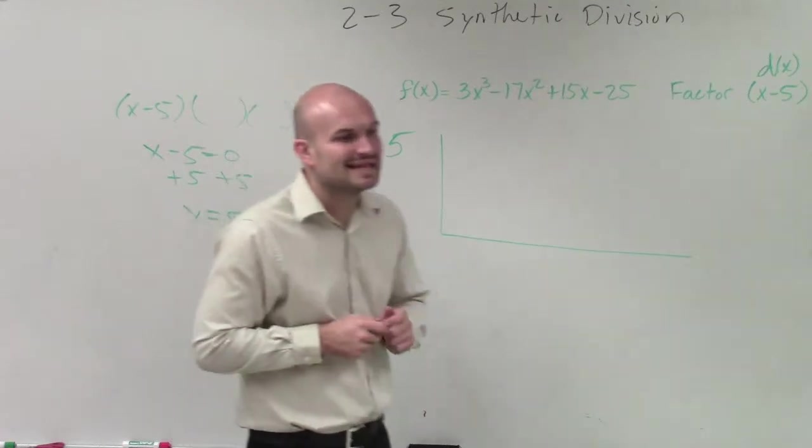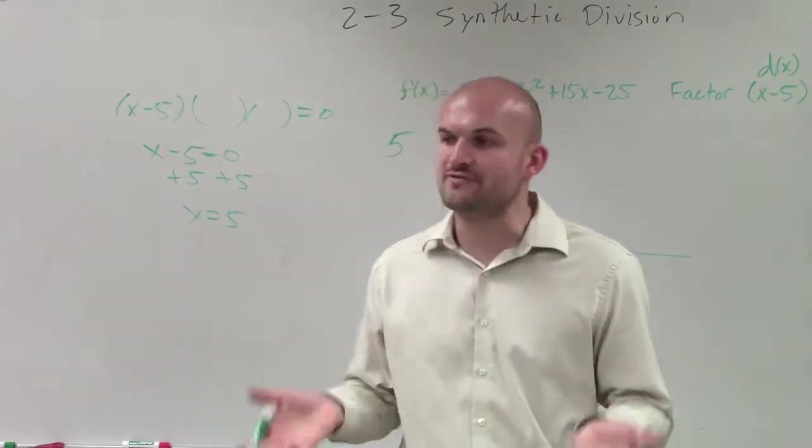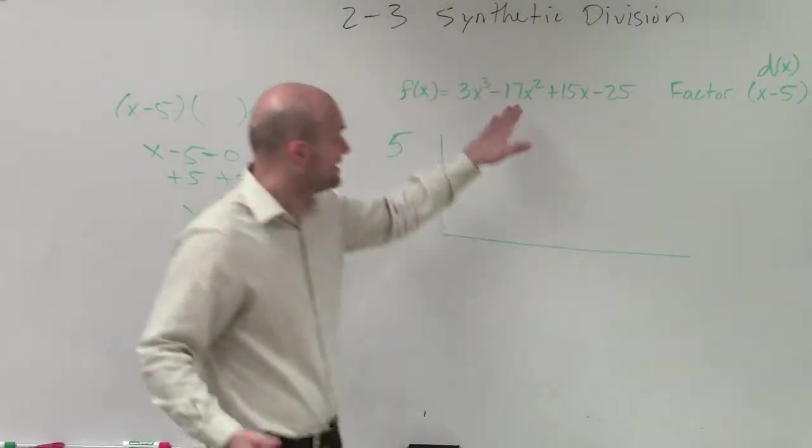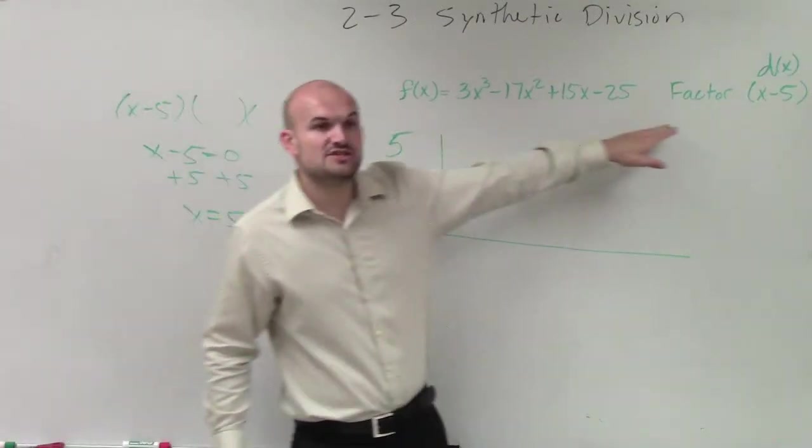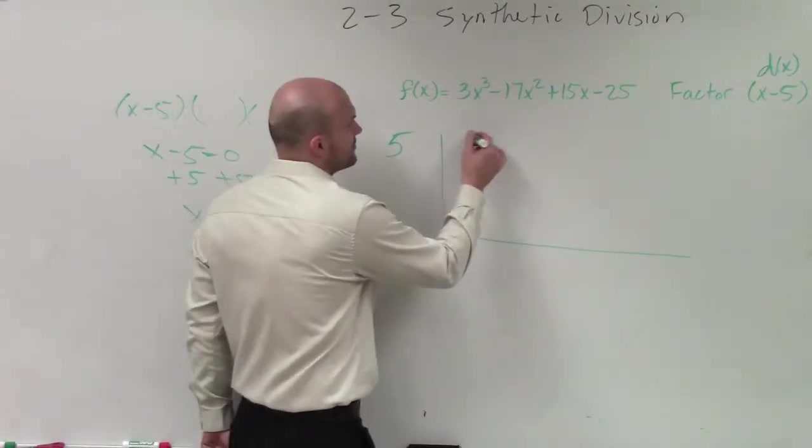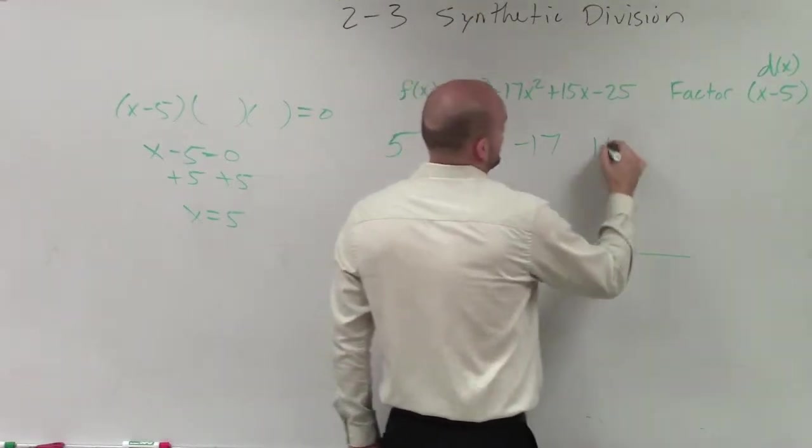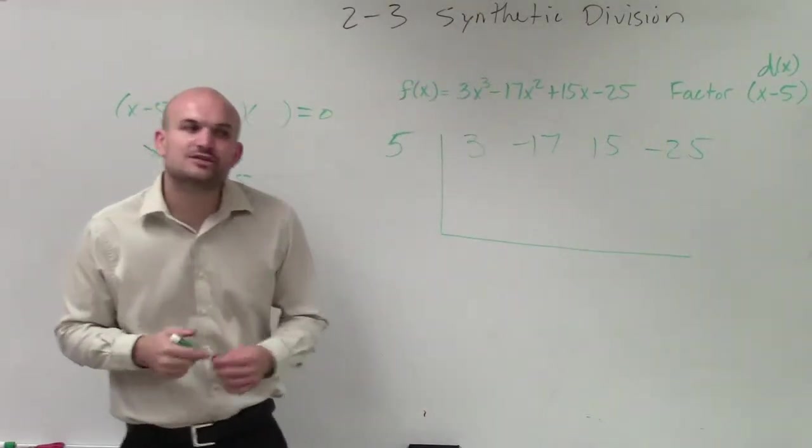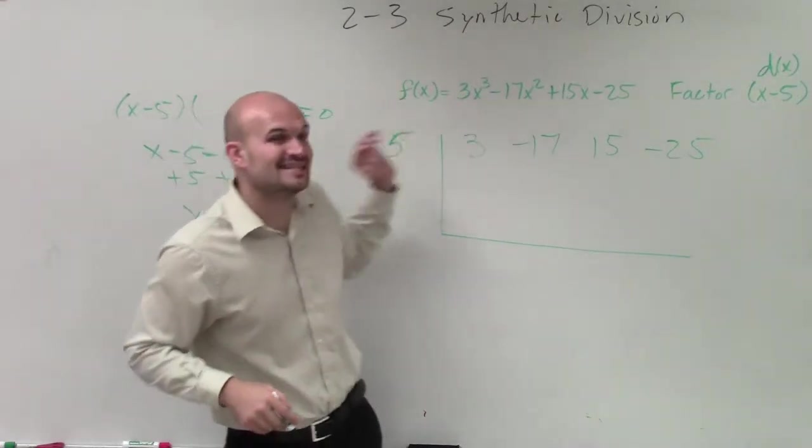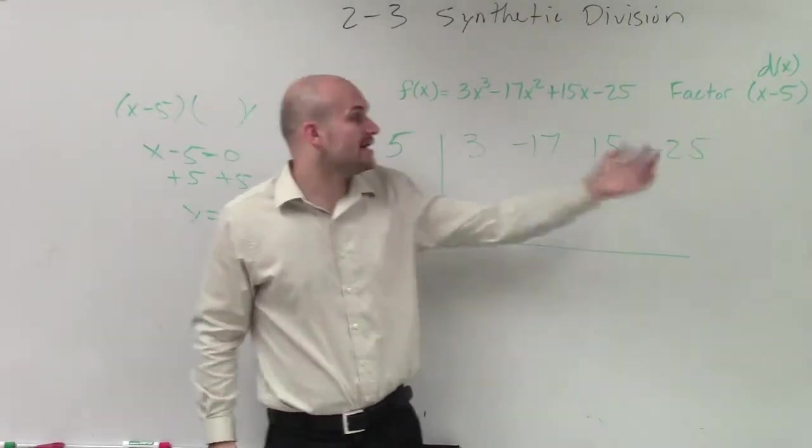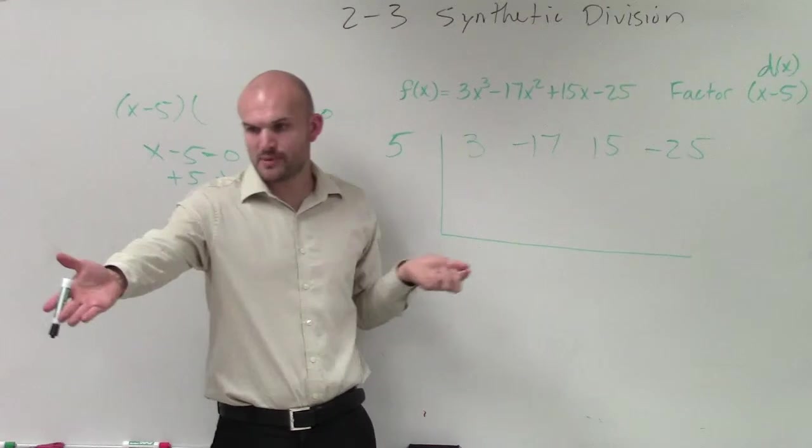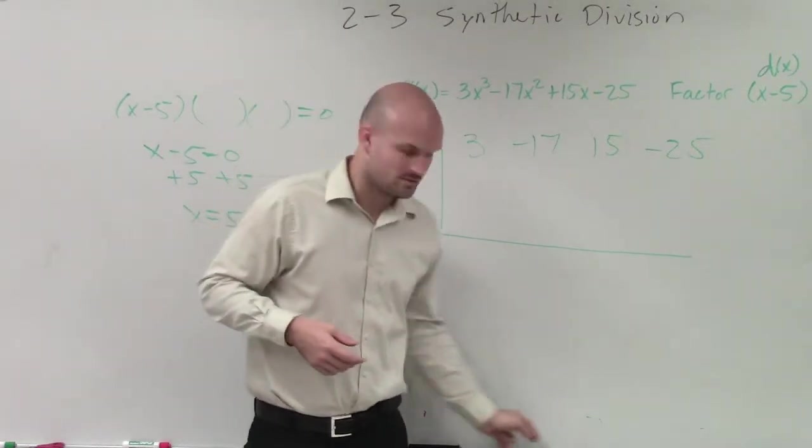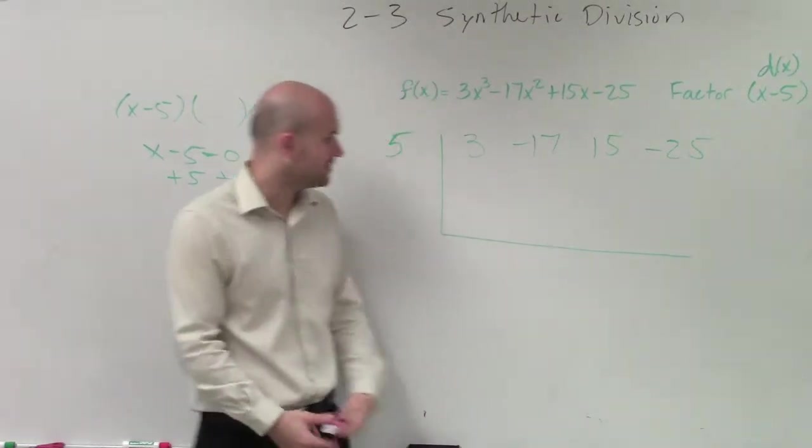Then, when applying synthetic division, what we do is we take the coefficients of our dividend and we line them up. Three, negative 17, 15, negative 25. We need to make sure that, one, our dividend is in descending order, and then also, if we're missing any terms, what do we put in for the missing term? Zero. Zero. Very good. All right.